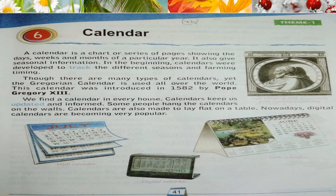In the beginning, calendars were developed to track the different seasons and farming timing. That means calendars were developed mostly to track the different seasons — winter season, summer season, autumn season — and to know what type of farming is good for that season.